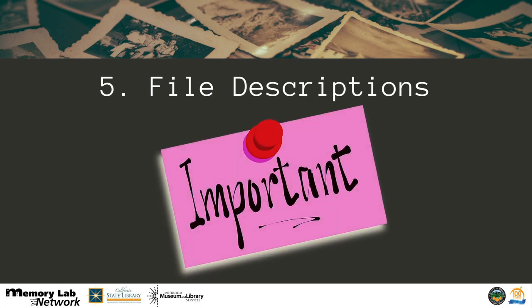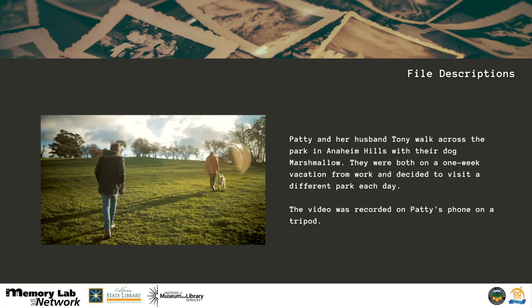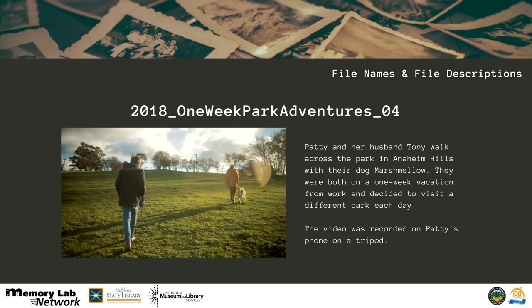In your file description, you want to include the human-added components: the who, what, where, when, why, and how. Here's an example using a make-believe scenario. Patty and her husband Tony walk across the park in Anaheim Hills with their dog, Marshmallow. They are both on a one-week vacation from work and decided to visit a different park each day. The video was recorded on Patty's phone on a tripod. As you can see, the file name — 2018 One Week Park Adventure, number four — and the file description work together to tell the whole story, whether that be for family and friends or the greater OC community.